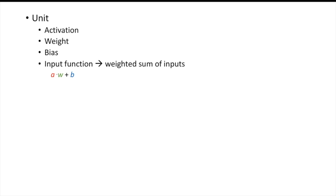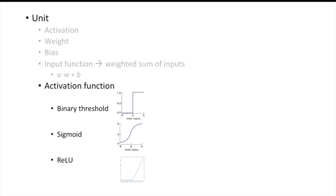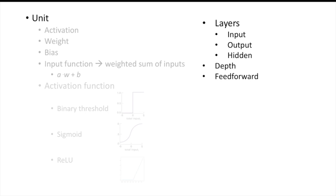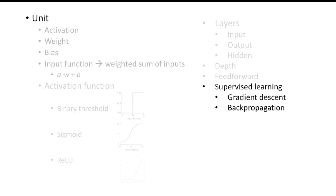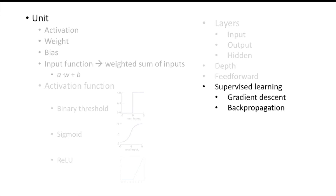So we have reviewed a series of notions concerning neural networks: the notion of a unit and its properties such as activation and weight; the notion of bias and the u-input function, in particular the weighted sum of inputs in the form a·w + b. We also reviewed activation functions, going through three examples: the binary threshold, the sigmoid, and the most widely used these days, which is ReLU. We covered the notion of layers — input, output, and hidden layers — the notion of the depth of a network, and feed-forward processing. We also have the notion of supervised learning by gradient descent and backpropagation, and a characterization of neural networks as computers that are parallel, tend to have distributed representation, and exhibit subsymbolic computation.